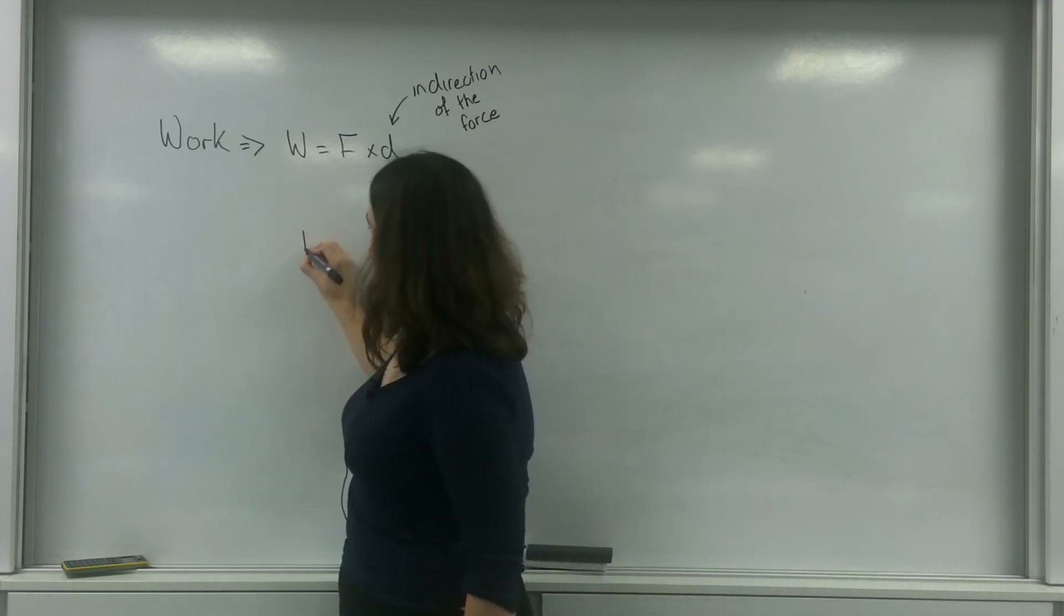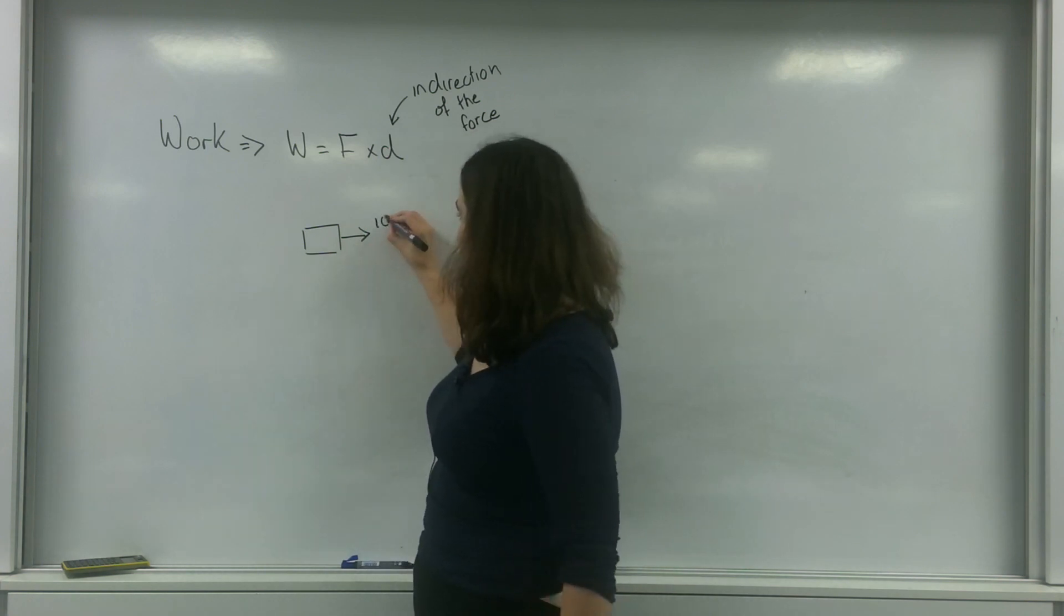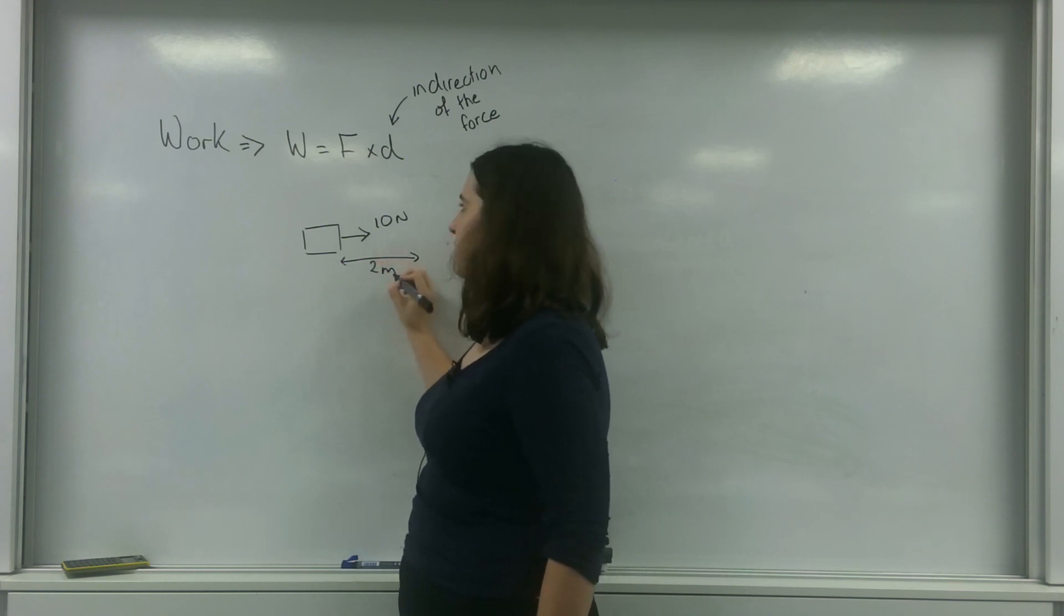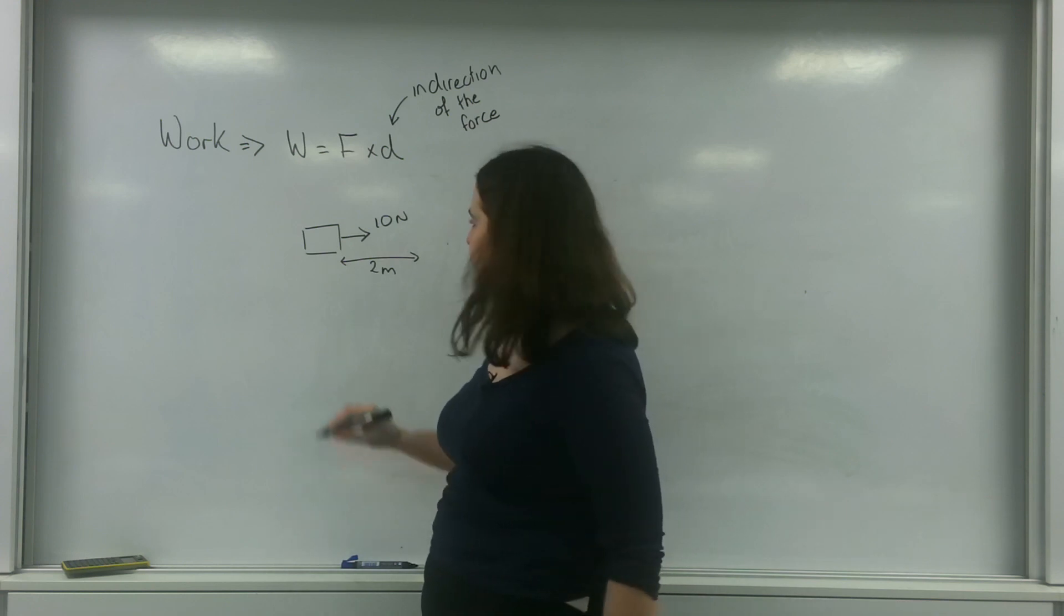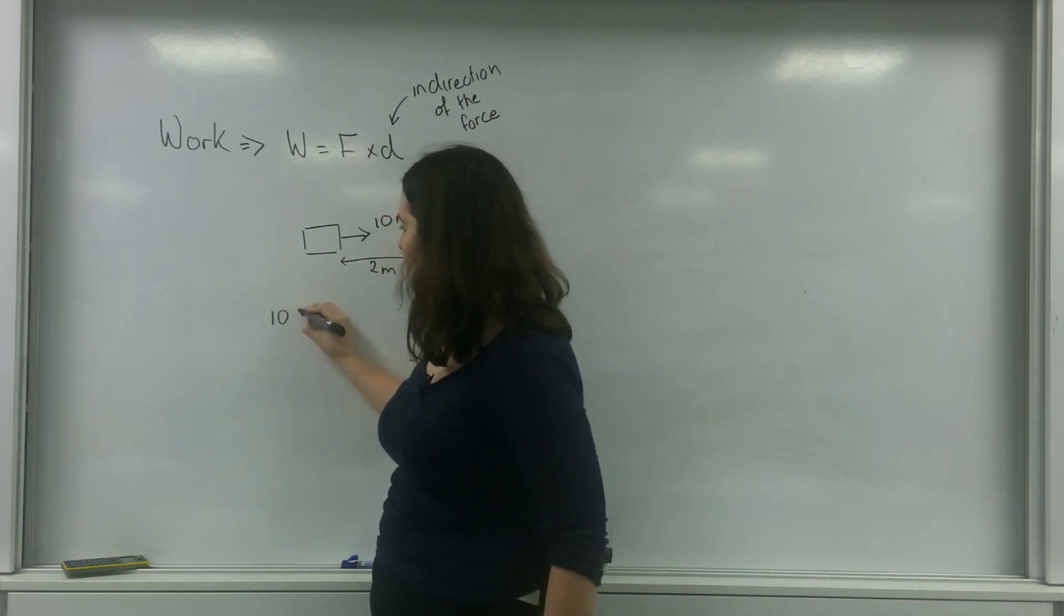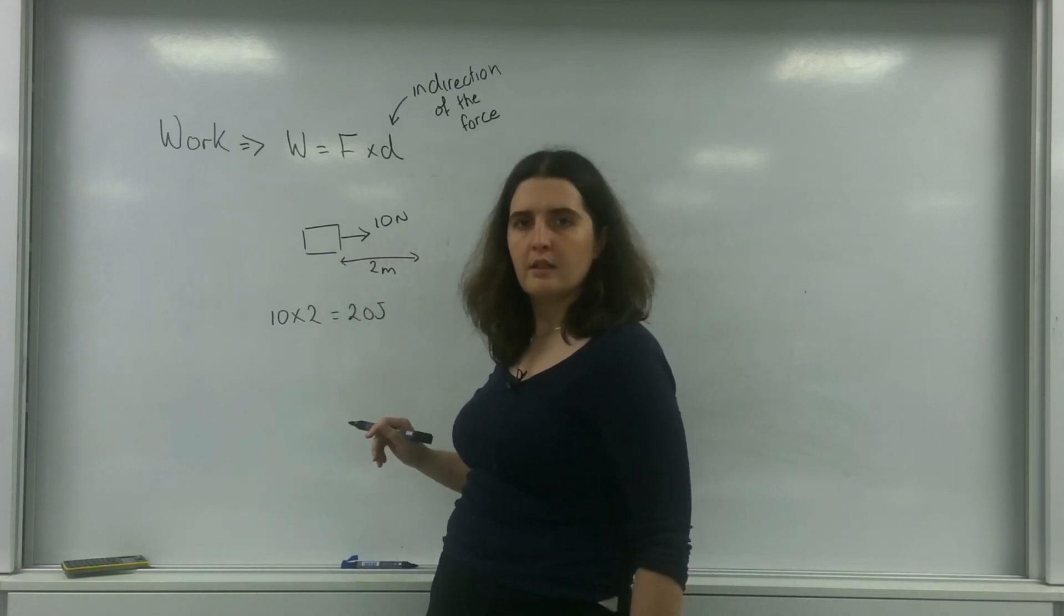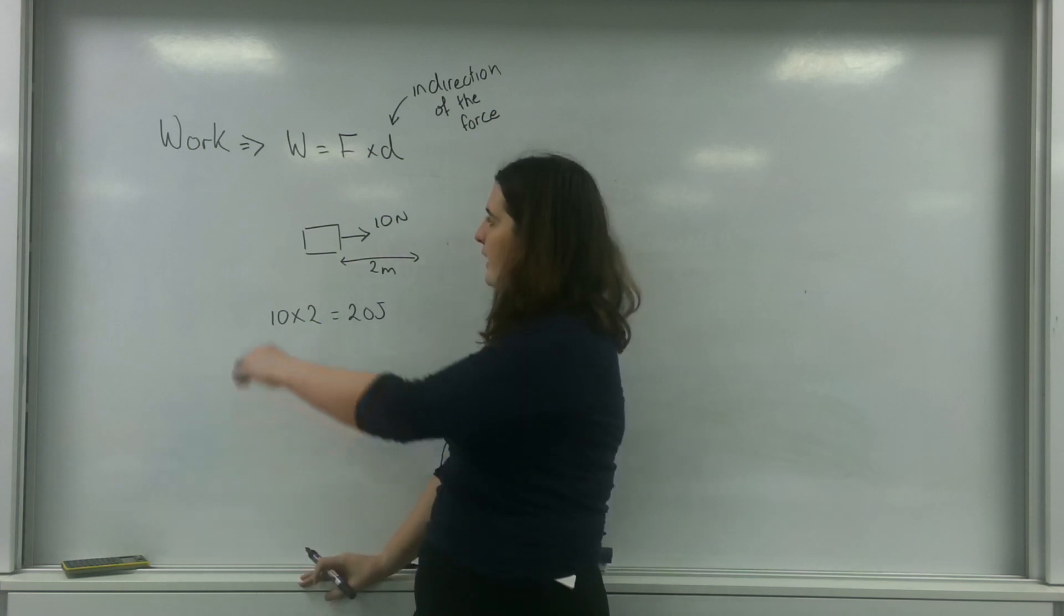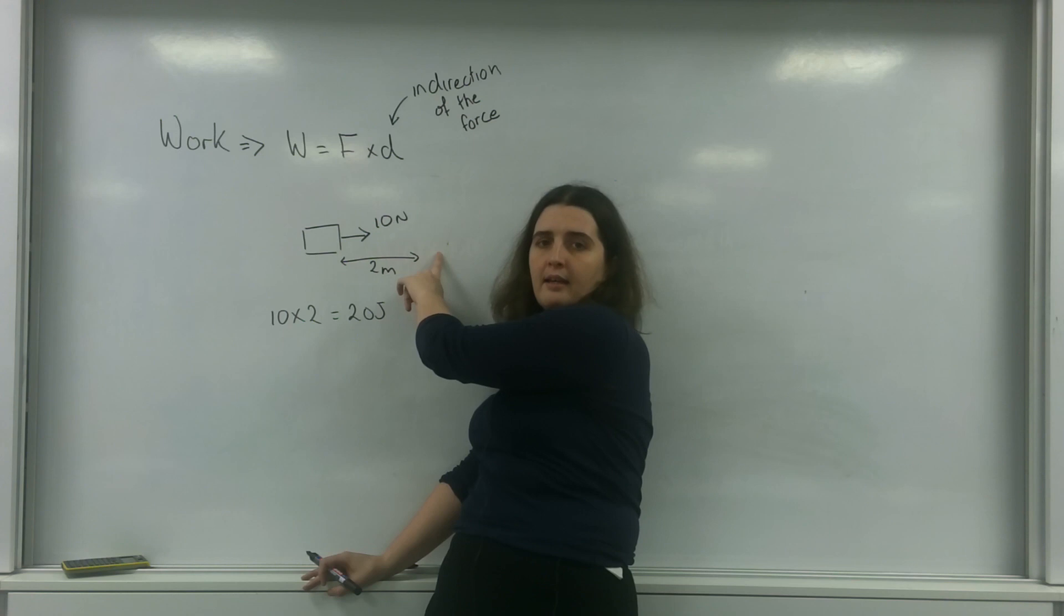So if an object is being pushed this way with 10 newtons over a distance of 2 meters, the amount of work that must be done to do that must be 10 times 2, which is 20 joules of work. So here I'm doing 20 joules of work to move from here to here in the same direction as this.